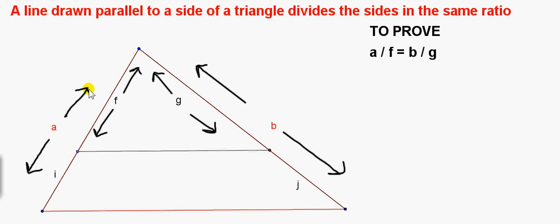In general, what we are going to prove is that this distance, which I am calling A, divided by this distance, F, equals B over G. So this line here is parallel to this side of the triangle.